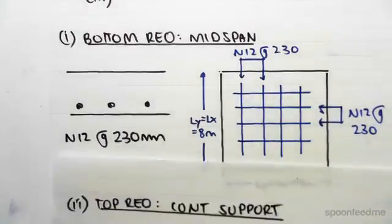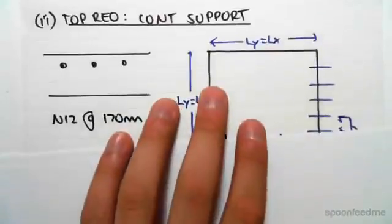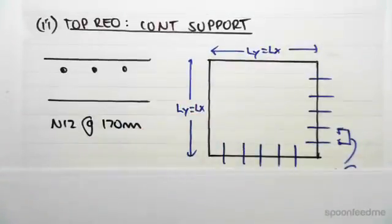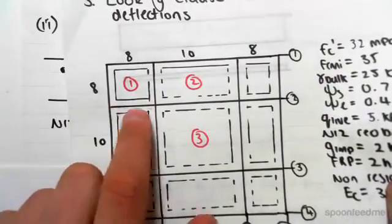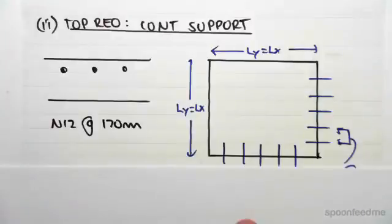The second one we're going to be doing is the top reinforcing at the continuous support. So if we look back at our slab, the continuous support or the continuous edge is there and there - it continues into the next slabs, so we're going to have reinforcing aligned like this and like this.